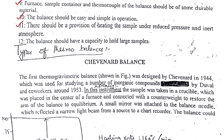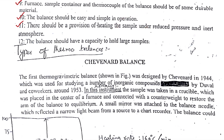There should be a provision for heating the sample under reduced pressure and inert atmosphere. If we close the sample in a closed chamber and reduce the pressure to create an inert environment, this will help achieve good results. The heat provided will only affect the sample, since the presence of air can disturb the sample's nature. A good thermobalance should have provision for an inert atmosphere.